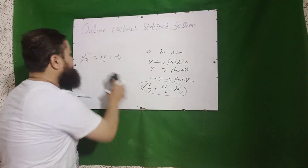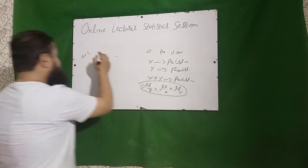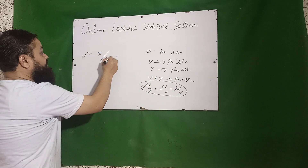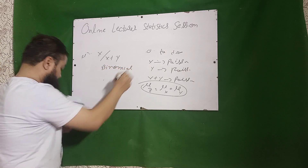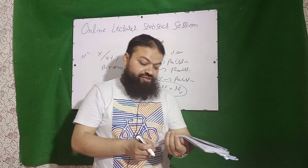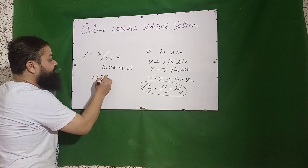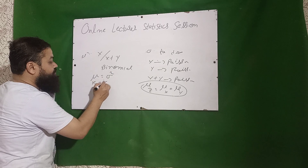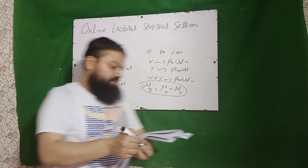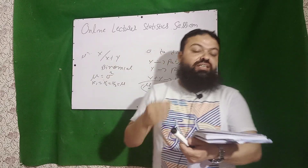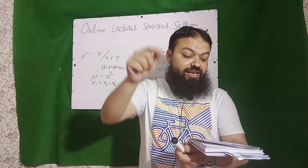Next question: if X follows Poisson and Y also follows Poisson, then X given X plus Y will follow binomial distribution. In Poisson distribution, mean equals variance: k₁ equals k₂ equals k₃ equals its parameter (mean).